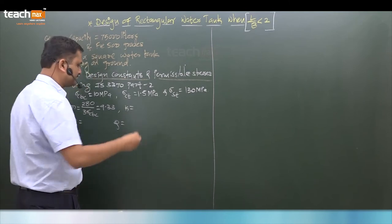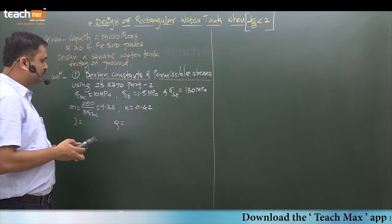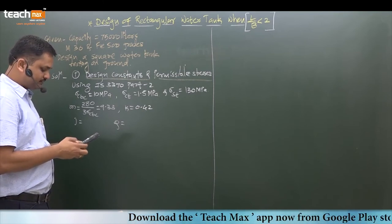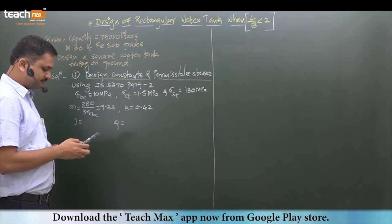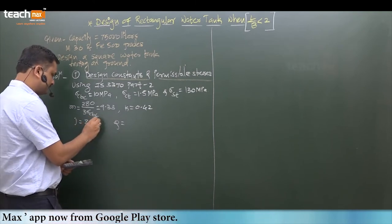Now J: 1 minus K by 3. So 1 minus 0.42 divided by 3 equals 0.86.